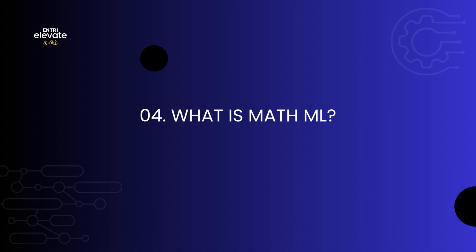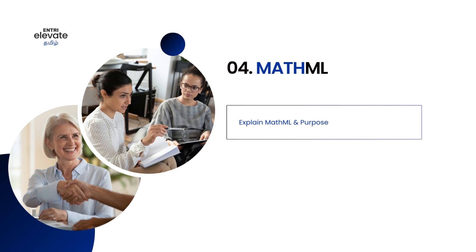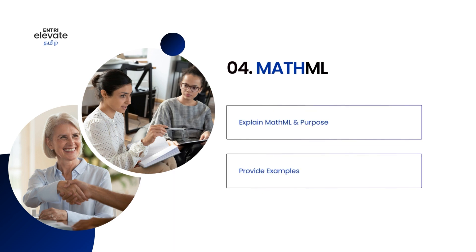Now let's move to the fourth question. What is MathML? MathML is very interesting — it stands for Mathematics Markup Language. Its purpose is to represent mathematical expressions and equations with easier visual representation. Examples you can include are matrix format, partial differential equations, and chemical reaction equations — these are all things you can include in MathML.